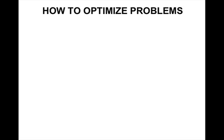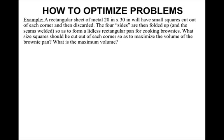So how do we optimize problems? We are going to use this example: a rectangular sheet of metal, 20 inches by 30 inches, will have small squares cut out of each corner and then discarded. The four sides are then folded up and the seams welded so as to form a lidless rectangular pan for cooking brownies. What size squares should be cut out of each corner so as to maximize the volume of the brownie pan, and what is the maximum volume?